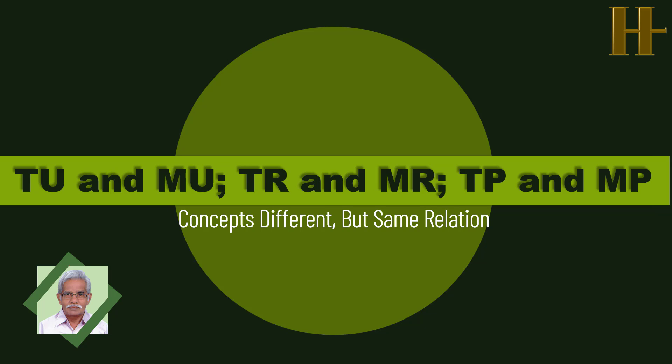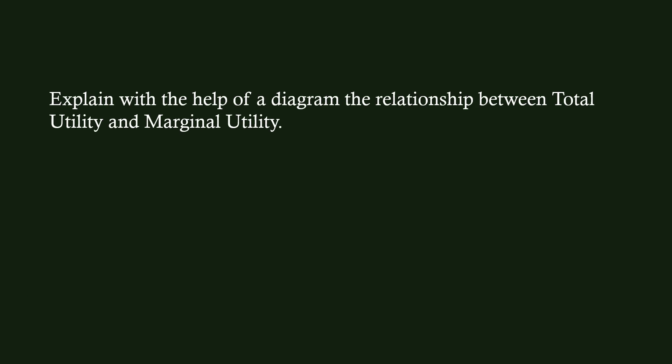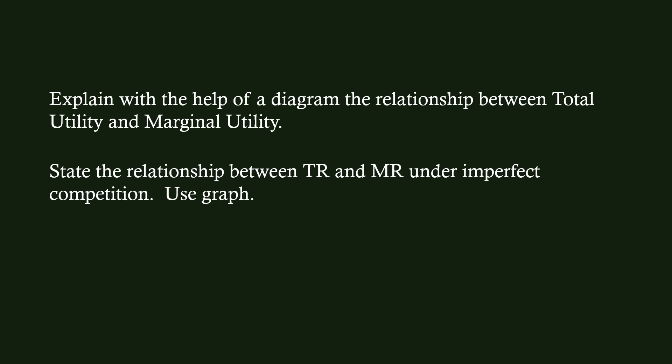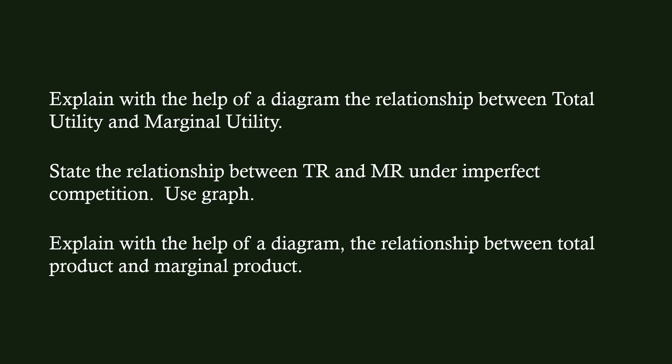Before we go into the lesson, read these questions carefully. Explain with the help of a diagram the relationship between Total Utility and Marginal Utility — this question is from Utility Analysis. Explain the relationship between Total Revenue and Marginal Revenue under Imperfect Competition — this question is from the lesson Revenue. Explain with the help of a diagram the relationship between Total Product and Marginal Product — this question is from Production.